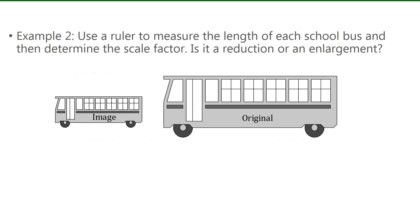For example 2, we're not given any measurements, so we have to use a ruler to measure the length of each school bus to determine the scale factor, then state if it's a reduction or enlargement. Comparing the image to the original, I can see the image is smaller, so it is a reduction. That means the scale factor should be less than 1.